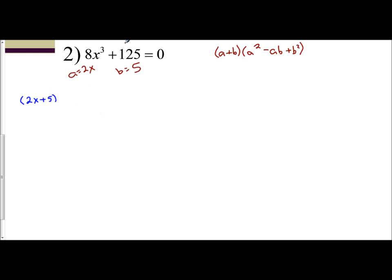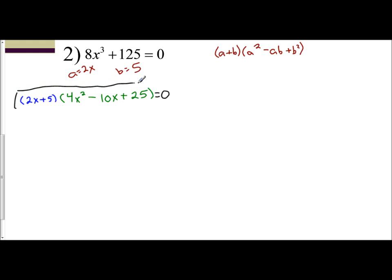In the next parenthesis, I have A squared: the square of 2 is 4 and of x is x squared, giving 4x squared. Minus A times B, so 2x times 5 is 10x. Plus B squared, which is 5 squared, which is 25. Remember, the 2x plus 5 is going to represent your real answer, and the 4x squared minus 10x plus 25 is going to represent your imaginary answer.